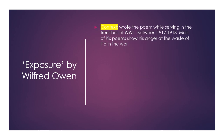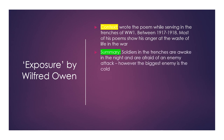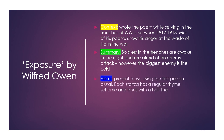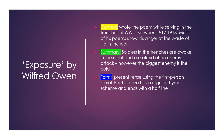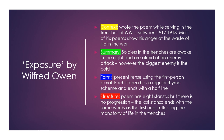Exposure by Wilfred Owen. He wrote the poem while serving in the trenches of World War I, sometime between 1917 and 1918. Most of his poems show his anger at the waste of life in the war. Soldiers in the trenches are awake in the night and are afraid of an enemy attack; however, the biggest enemy is the cold. The form is present tense using the first person plural. Each stanza has a regular rhyme scheme and ends with a half line. The poem has eight stanzas but there is no progression — the last stanza ends with the same words as the first, reflecting the monotony of life in the trenches.